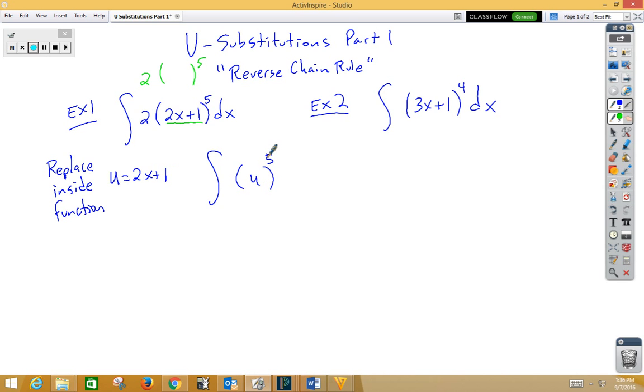Here's our problem. In order to integrate, we can't have u's and x's mixed together. So somehow we need to turn this into a du. Well, to do that, we're going to come back over to u equals 2x plus 1, and we're going to take the derivative of that.